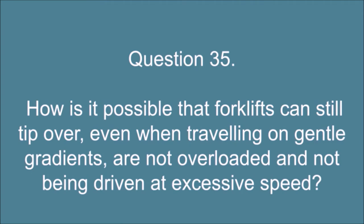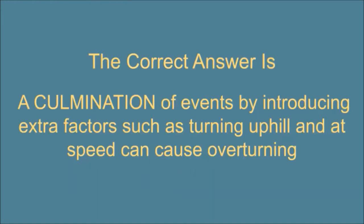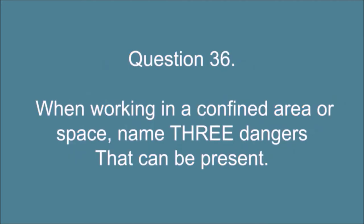Question 35. How is it possible that forklifts can still tip over, even when traveling on gentle gradients, are not overloaded and not being driven at excessive speed? The correct answer is: A culmination of events by introducing extra factors such as turning uphill and at speed can cause overturning.